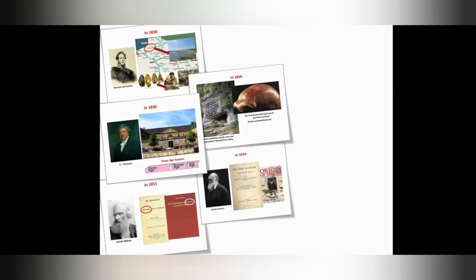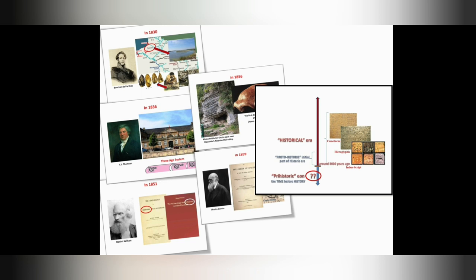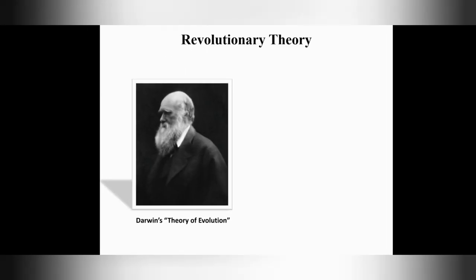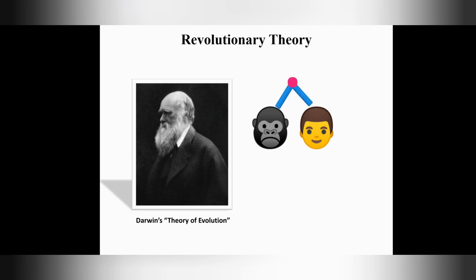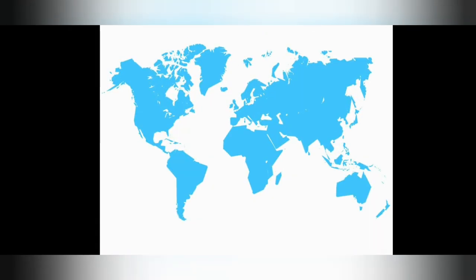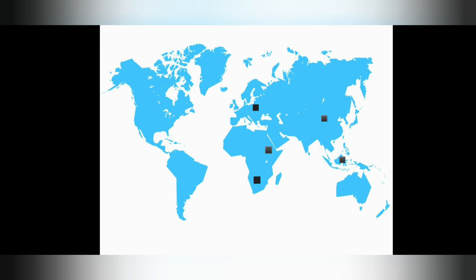In my previous video, I have already discussed five important phenomena which prepared a firm foundation on which prehistory as a word and a separate discipline had been established. Among those five important events, one was Darwin's revolutionary theory of evolution, in which he claimed that the forefather of ape and human was the same, and that humans got their present shape through a long and gradual process of evolution.